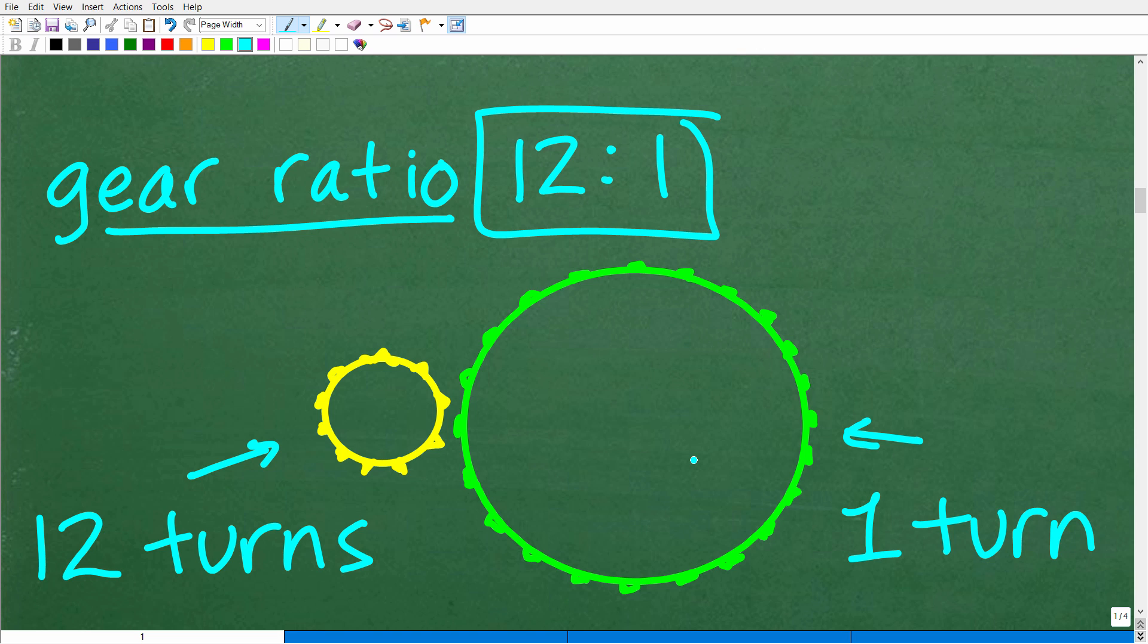That makes sense. We need to understand what a gear ratio is. A gear ratio of 12 to 1 means that the small gear is going to have to turn 12 times to make the big gear complete one revolution.